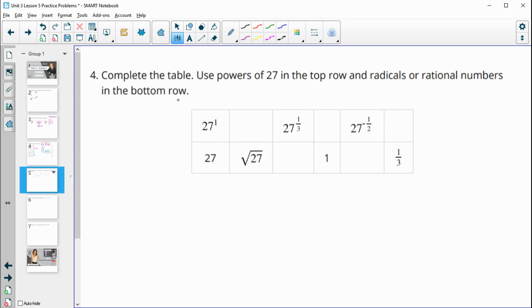Number 4, complete the table using powers of 27 in the top and radicals or rational numbers in the bottom. So 27 to the 1st power is the same as 27. The square root of 27 is 27 to the 1 half power. 27 to the 1 3rd means what number times itself 3 times will get us to 27. So on the last screen, we looked at 1 to the 3rd is 1. 2 to the 3rd was 8. 3 to the 3rd, so 3 times 3 is 9, times another 3 is 27. So 27 to the 1 3rd power is 3.